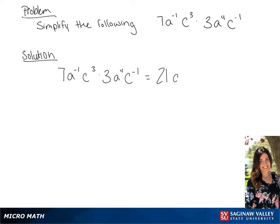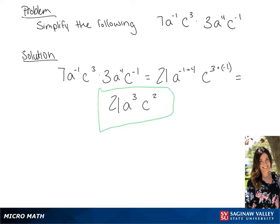We're going to add the exponents for the a value. So we have a negative 1 plus 4. And we're going to do the same with c. So we have c 3 plus negative 1. Our final answer will be 21a cubed c squared.